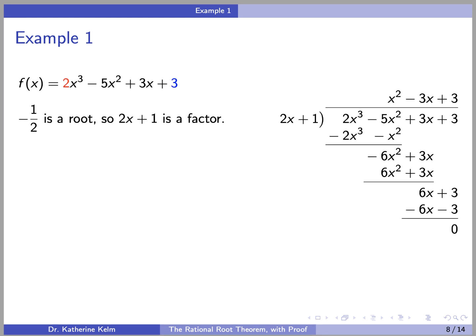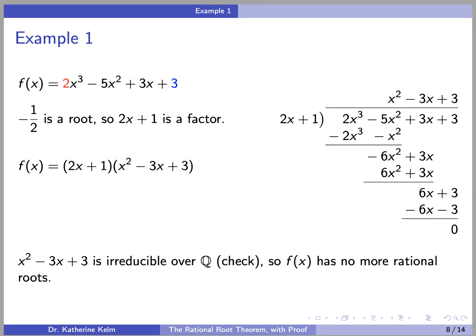By the Factor Theorem, since -½ is a root, x + ½ is a factor, and any rational multiple of x + ½ is also a factor. So in particular, 2x + 1 is a factor. We can perform polynomial division to see that f(x) factors as (2x + 1)(x² - 3x + 3). We can check that x² - 3x + 3 is irreducible over the rationals, so f(x) has no more rational roots.